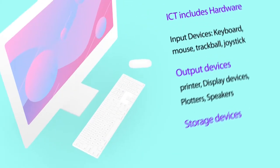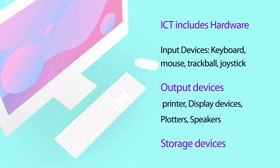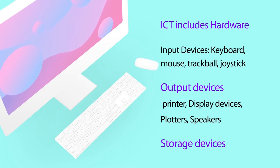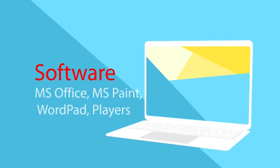ICT includes the following components. First is the hardware component — solid state devices having definite physical appearance, which may include input devices like keyboard, mouse, track ball, joystick; output devices like printer; display devices like plotter and speaker; and storage devices. The software part includes programs having a set of instructions to facilitate the working of a computer — for example, operating system and application software like MS Office, MS Paint, WordPad, and media players.